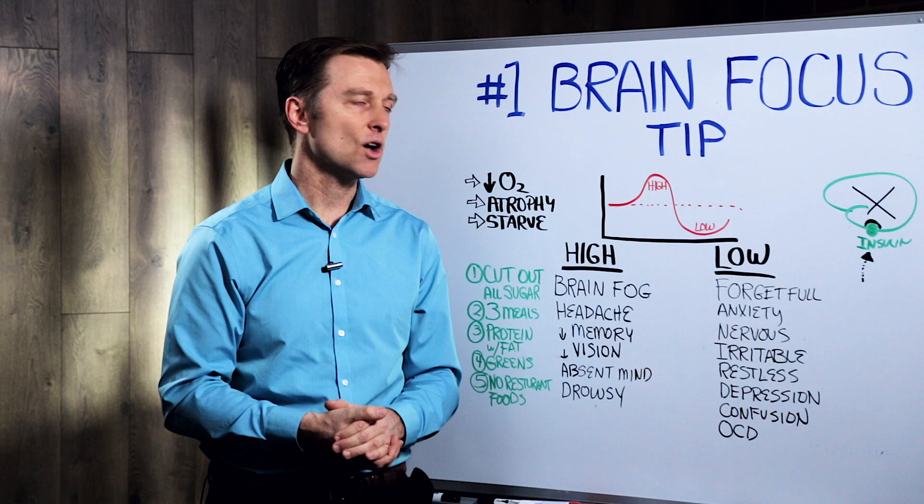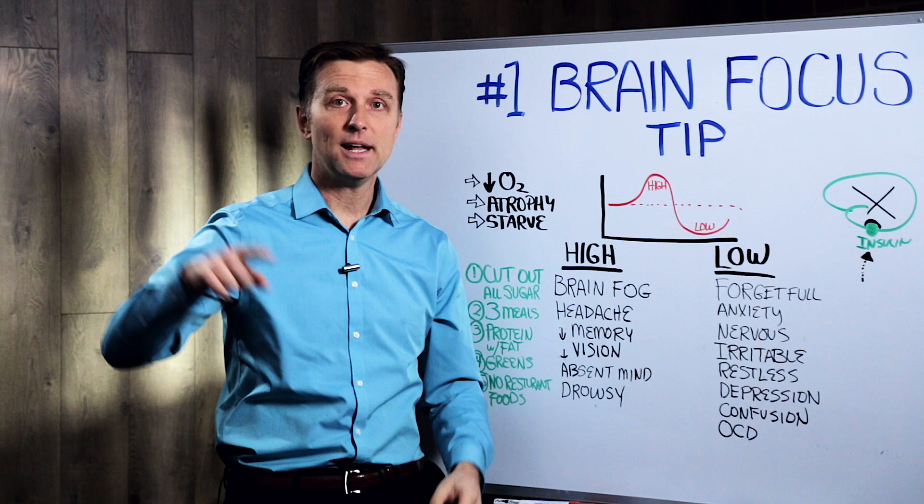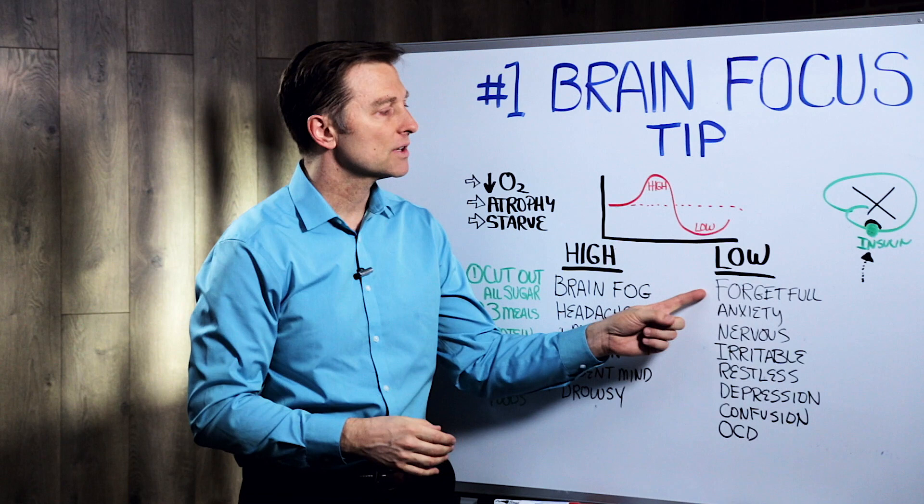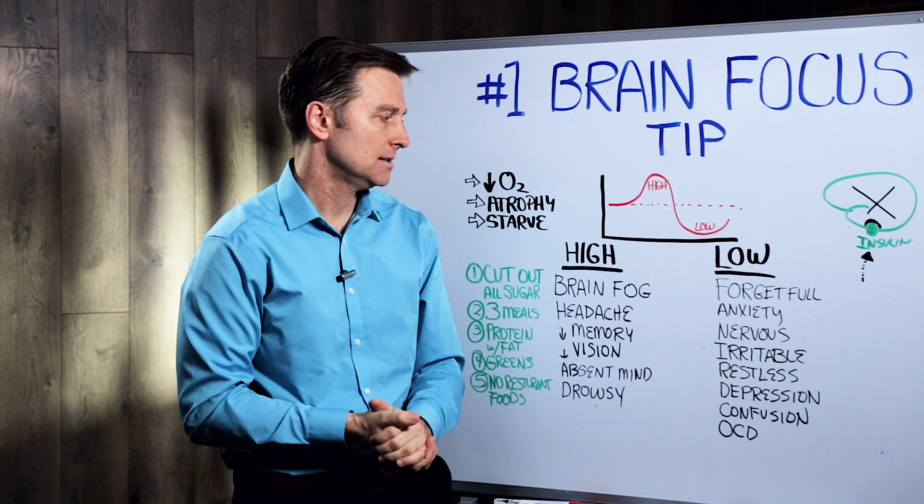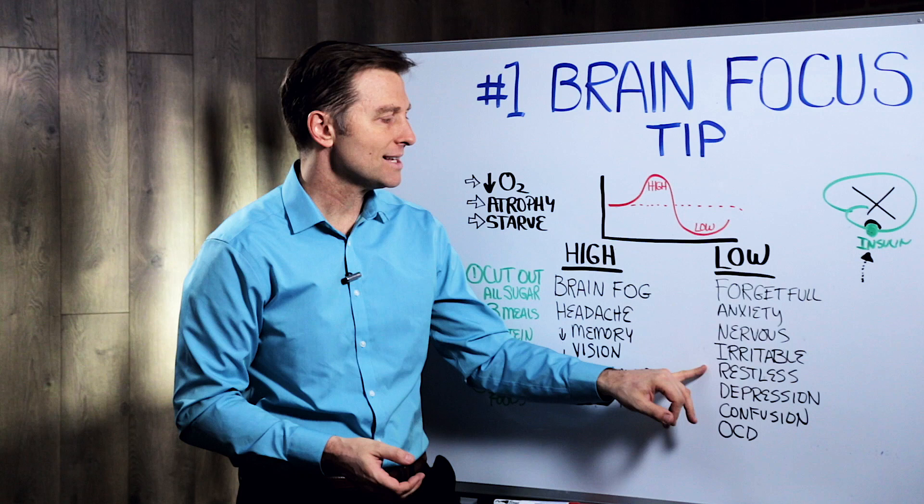And then we have low blood sugars. And even diabetics, they can have high and low depending on if they're taking their medication, it drops too low. Low blood sugars, forgetfulness, anxiety, from worry to panic attacks, nervous, irritable, highly critical, restlessness, depression, confusion, OCD.